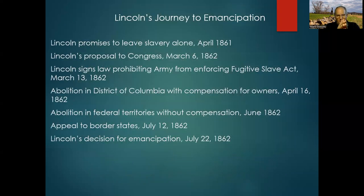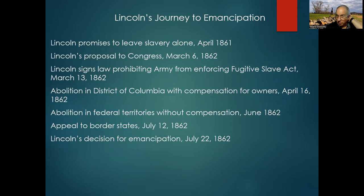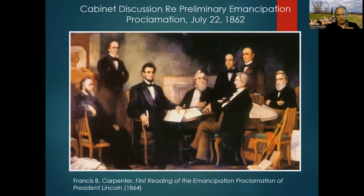Lincoln had his journey to emancipation — milestones from wanting to leave slavery alone in April 1861 to deciding to issue an Emancipation Proclamation. He tried to move toward emancipation within existing federal law, but issuing an Emancipation Proclamation would be unconstitutional unless done under his powers as commander in chief, as a military necessity. On July 22nd, 1862, Lincoln met with his cabinet and read them a preliminary Emancipation Proclamation.